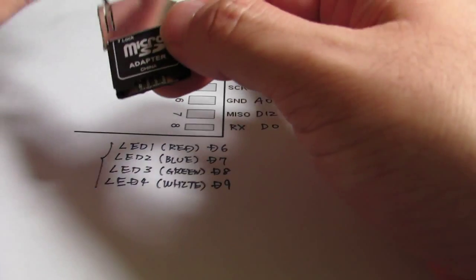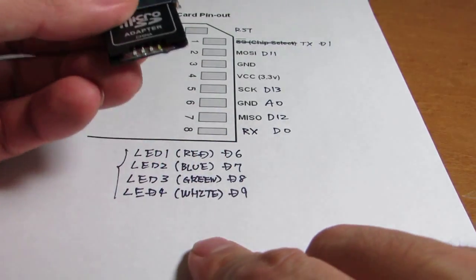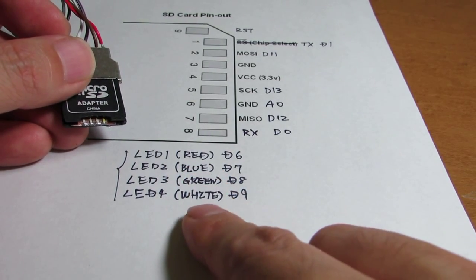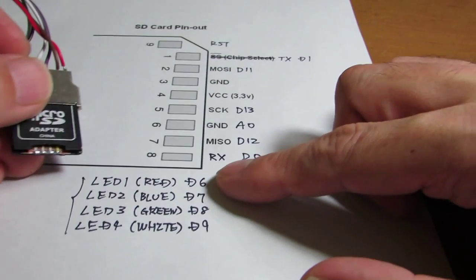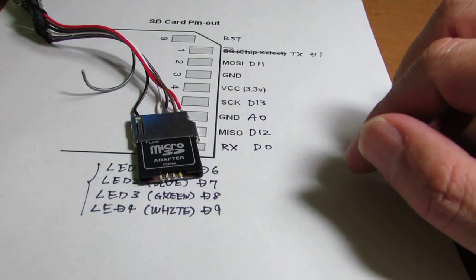In addition, I added four LEDs on board. LED one is red, LED two is blue, LED three is green, LED four is white, and each of them is connected to D6, D7, D8, D9. Now let's see how it works.